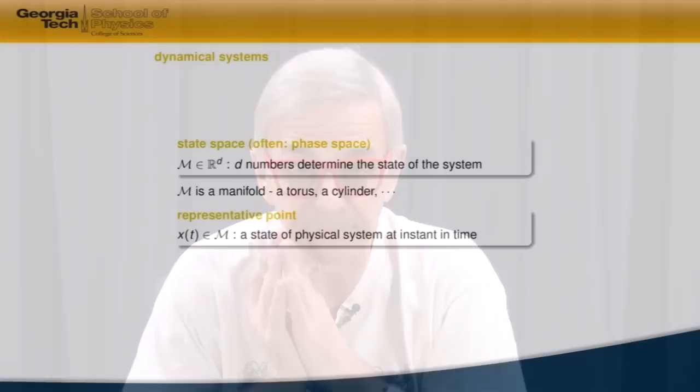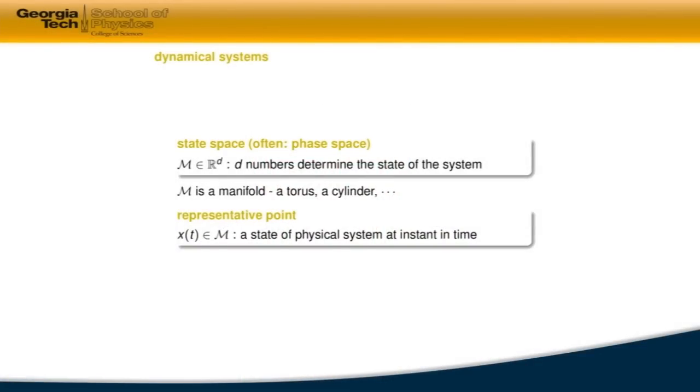So we start the course by a very general discussion of what is a dynamical system. And dynamical system is something that's very intuitive. It's a very classical notion. It's how Babylonians thought about these things. They thought that there was a celestial orb. And that is what we call a state space.